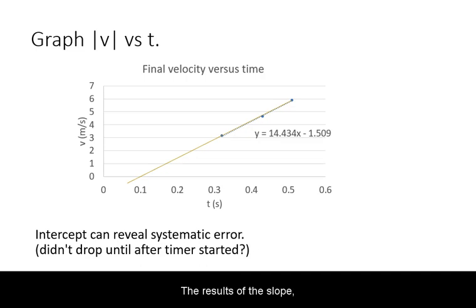The result of the slope and the intercept both can reveal systematic sources of error.